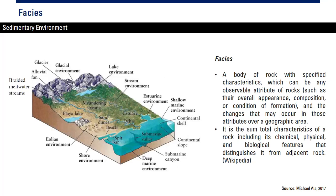When we are talking about rock properties, we first need to know about facies. Maybe you already learned about facies in geology class, or maybe in formation evaluation class. The definition of facies you can read here. This is from Wikipedia. A facies is a body of rock with specified characteristics, which can be any observable attributes of rock, such as overall appearance, composition, condition of formation, and the changes that may occur in those attributes over a geographic area.